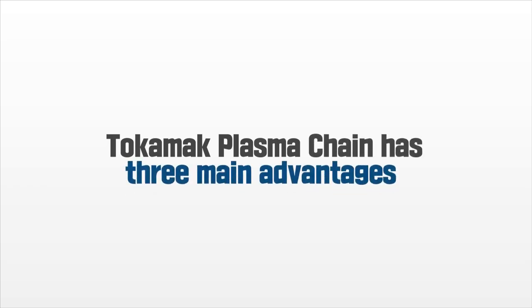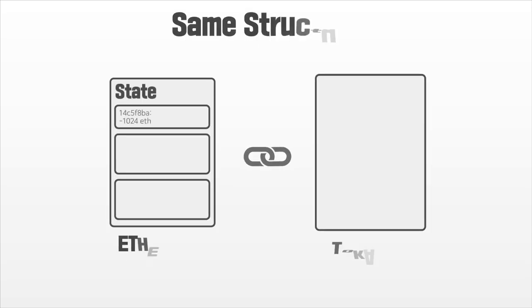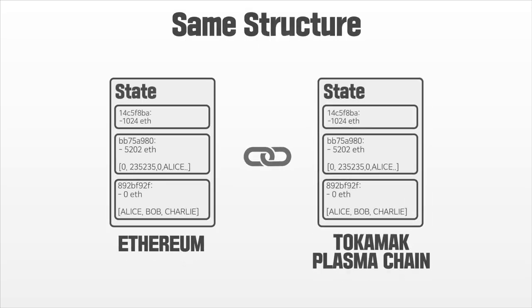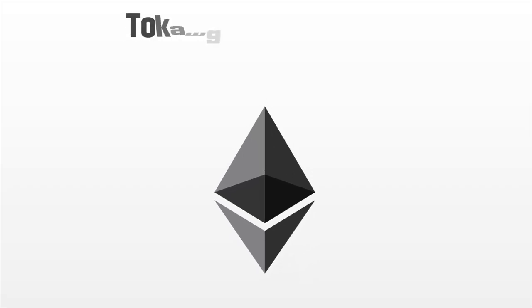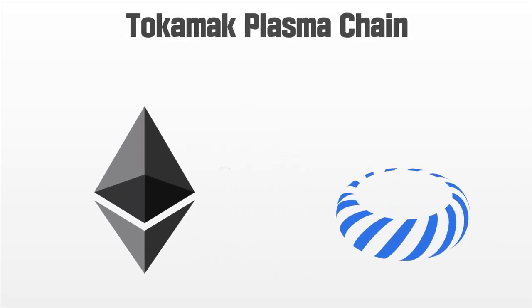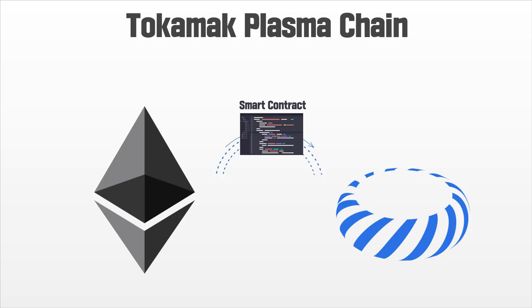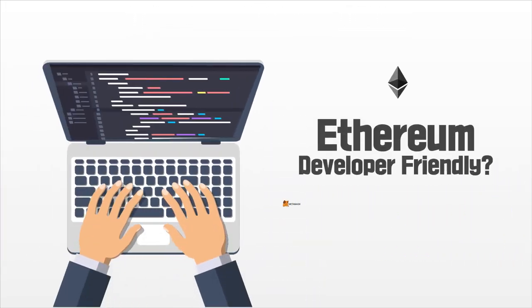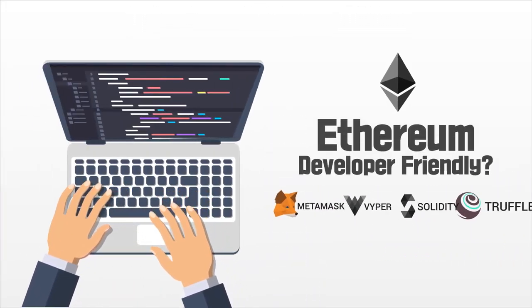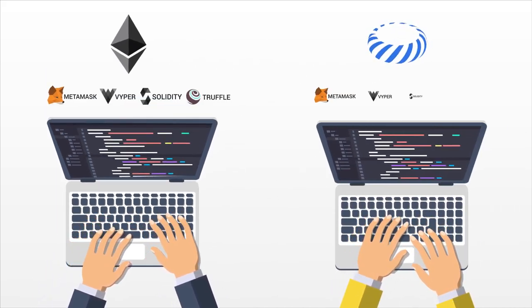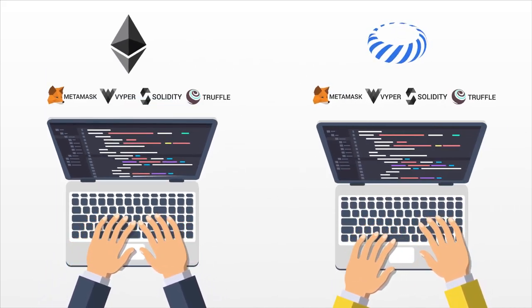Tokamak plasma chain has three main advantages. First, it has the same structure as the Ethereum blockchain. This means that all smart contracts now running in Ethereum can run smoothly in the Tokamak plasma chain. Developers can develop in an environment identical to the Ethereum one.